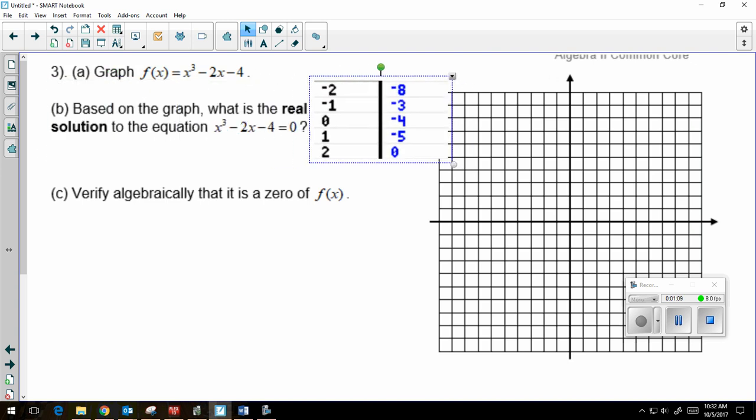Here's my xy table. And now I'm going to plot the points. So negative 2, negative 8. Negative 1, negative 3. Zero, negative 4. 1, negative 5. 2, 0.